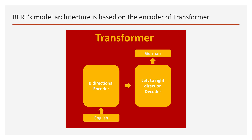Transformer is a state-of-the-art deep learning model, mostly for machine translation using encoder-decoder architecture, introduced by Google in 2017. The Transformer's encoder is the bidirectional encoder, and the decoder is the left-to-right direction decoder.